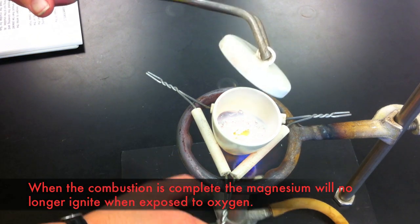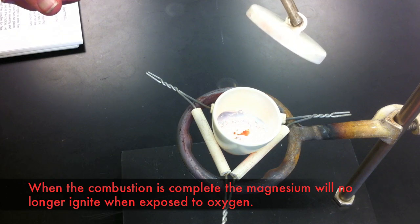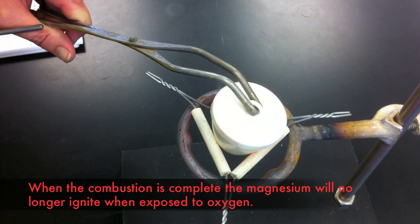You can turn off the Bunsen burner and leave the crucible to cool. Allow it to cool completely before proceeding with the next step.